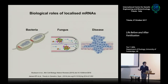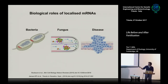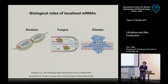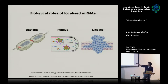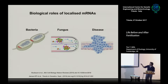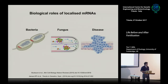RNA localization also functions in bacteria, where certain RNAs localize to the poles, important for horizontal gene transfer. We also see it in fungi — there's a great model system in corn fungus where RNA can move on endosomes out to the poles. In disease, as mentioned, we see it in human diseases like cancer and MS, and it's been shown more and more to be important.